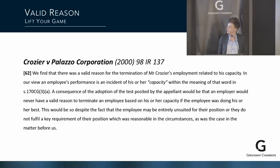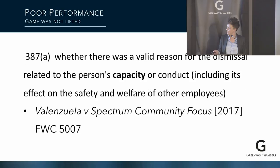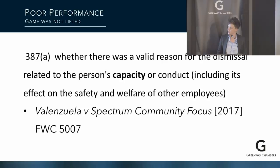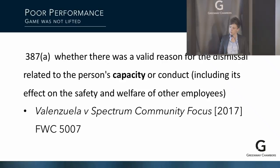Nevertheless that dismissal was upheld. Every argument Crozier ran about procedural fairness, unfair targets, and not knowing what was going on was rejected because it was just apparent to the Commission he could not perform the role. That comes through in the legislation now. Under s387, if you're running an unfair dismissal in relation to an employee's performance, the conventional approach is to address it as a question of capacity — though sometimes it is treated as a misconduct question, for example where there's a safety breach.